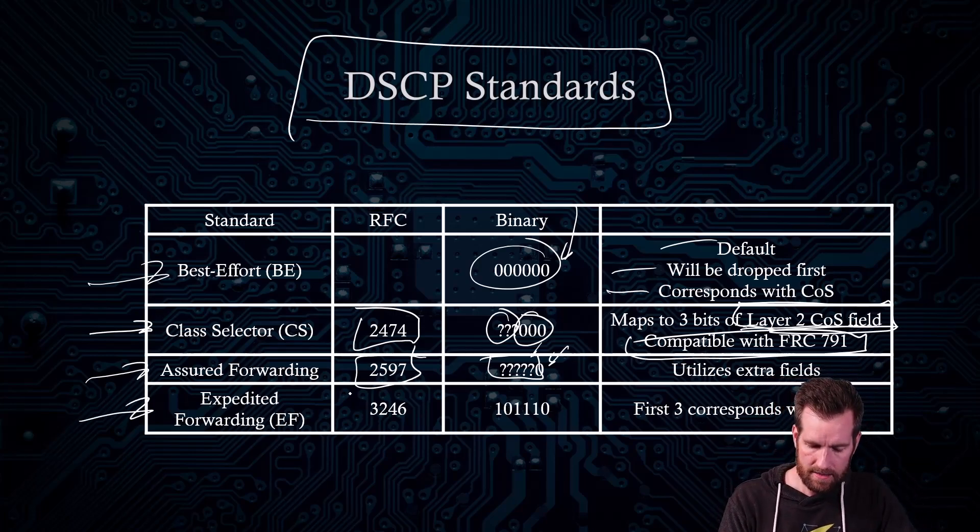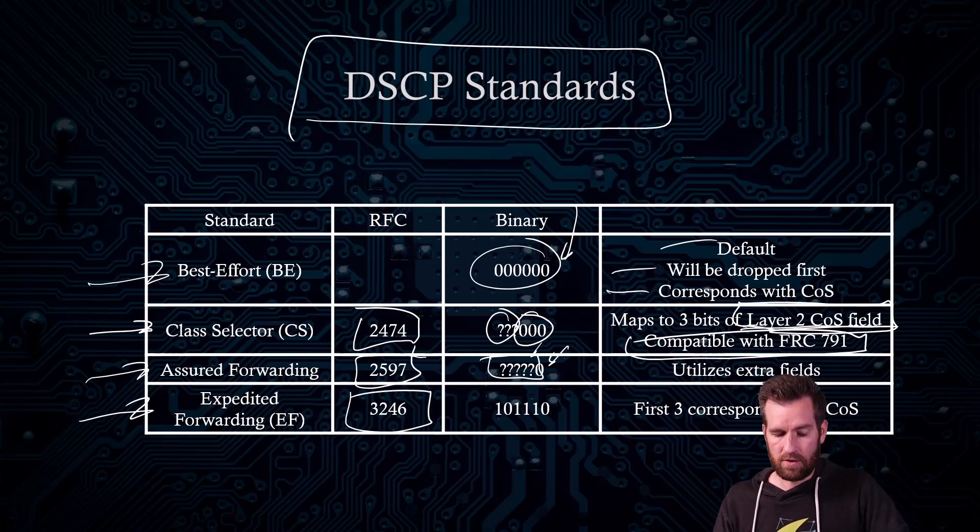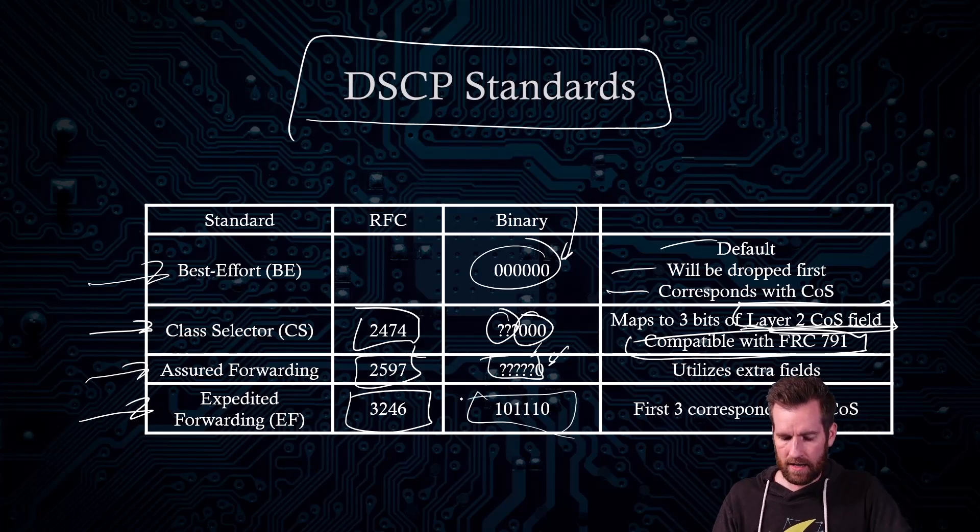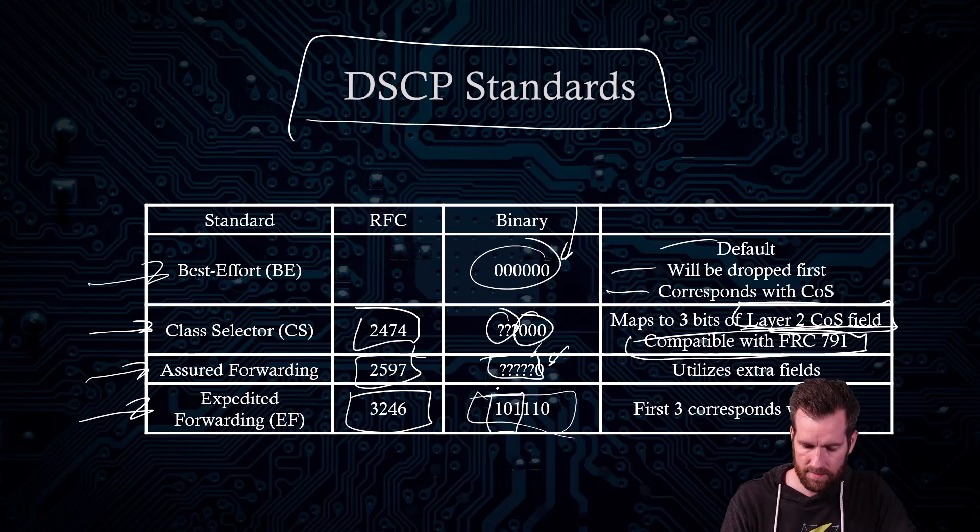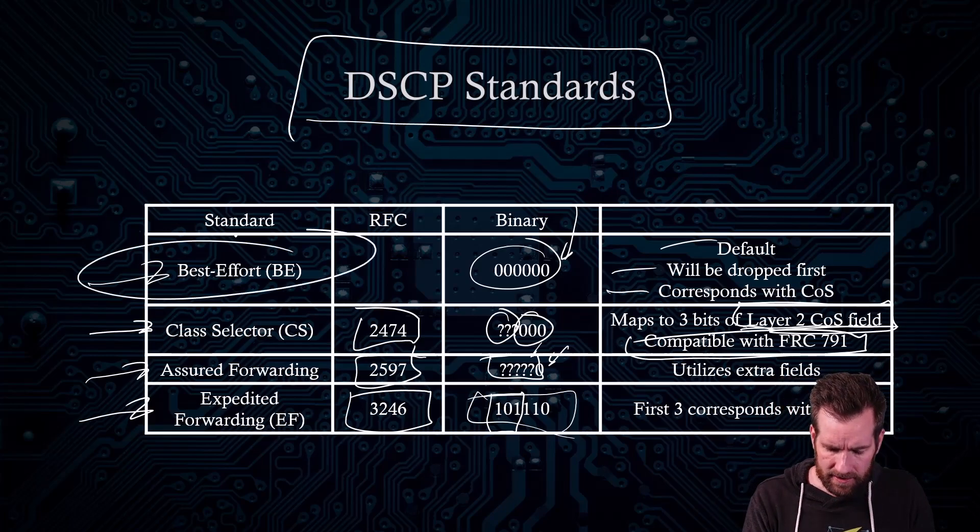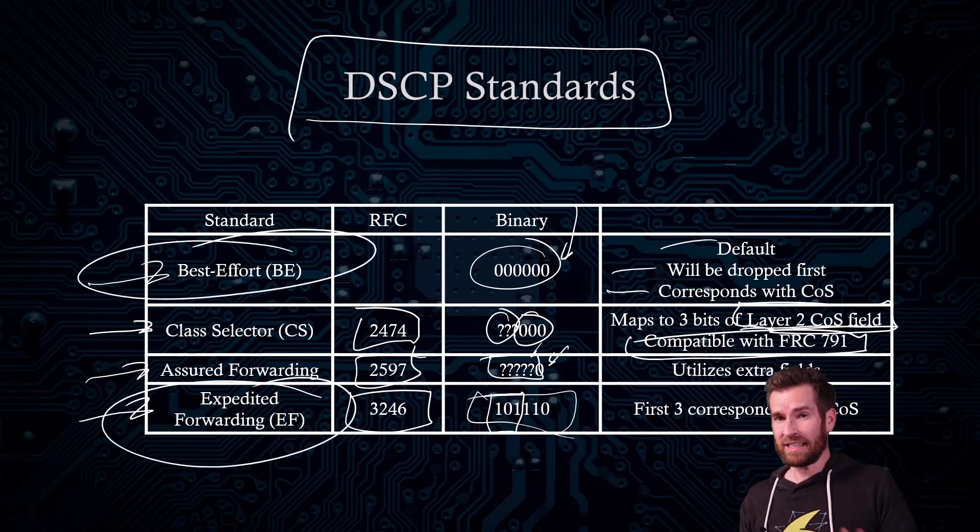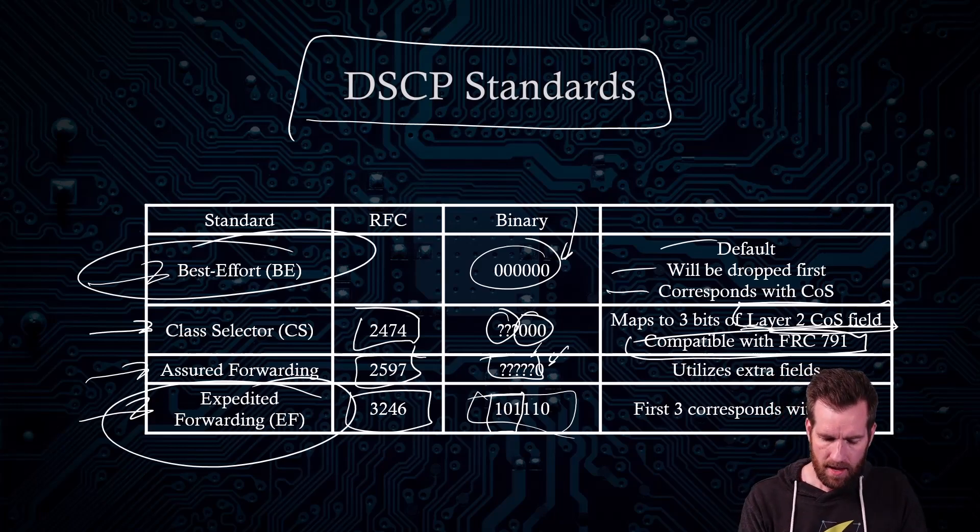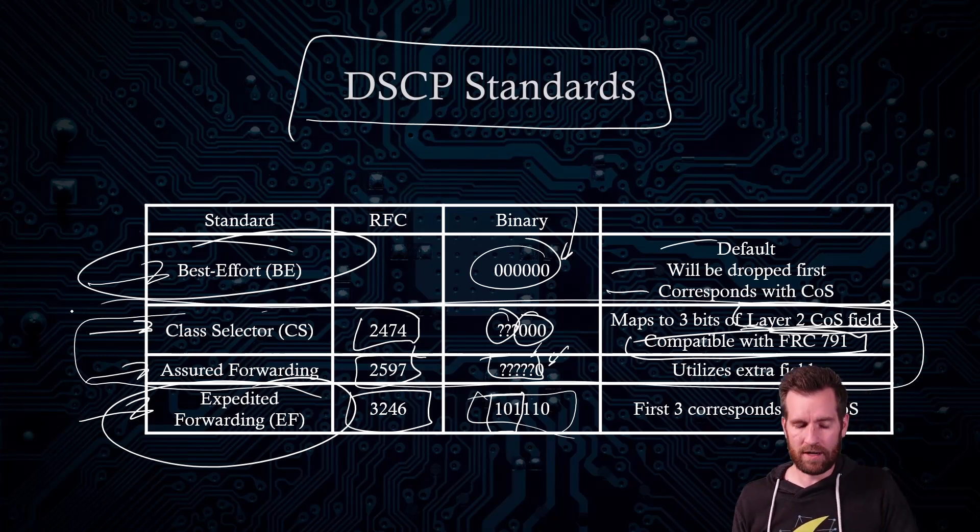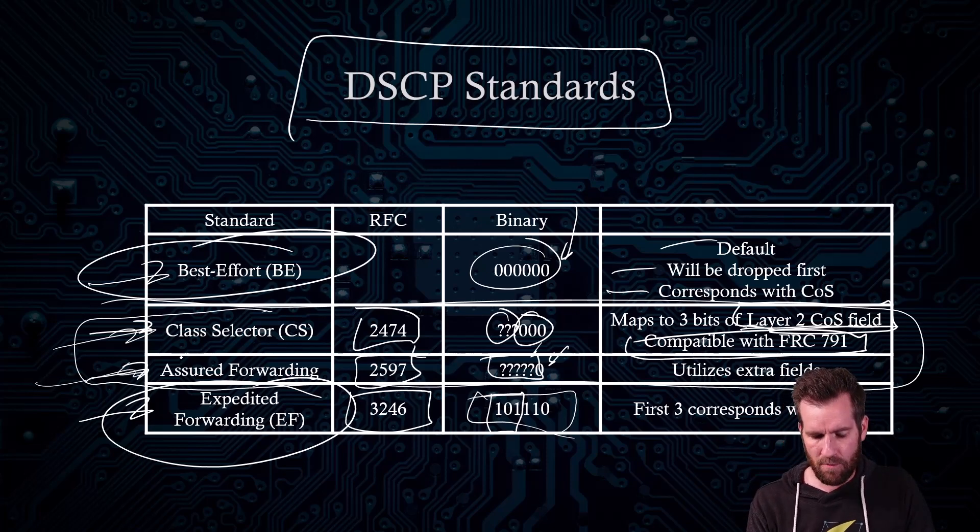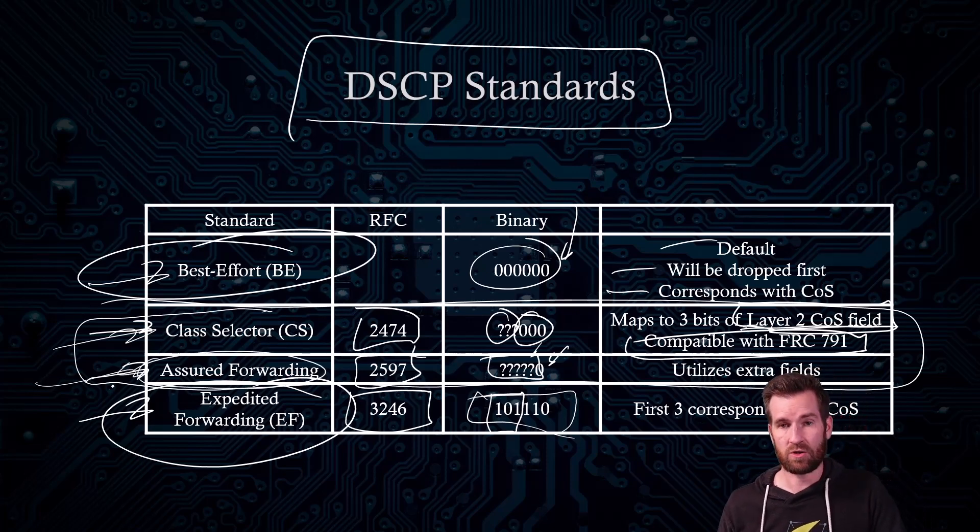Expedited forwarding is defined by RFC 3246. And the binary for this is 101110. And the first three bits still correspond with our class of service. The best effort and expedited forwarding are really simple. So we're not going to get really in-depth into that. But this class selector and assured forwarding is a little more in-depth. So we're going to cover this class selector. And then we're going to spend most of our time on this assured forwarding.